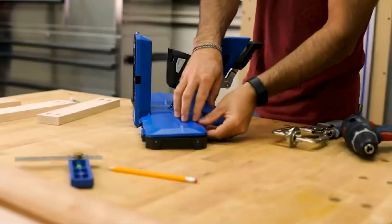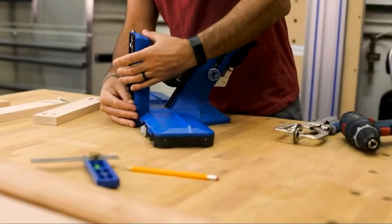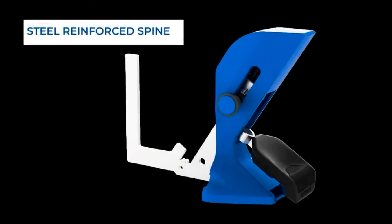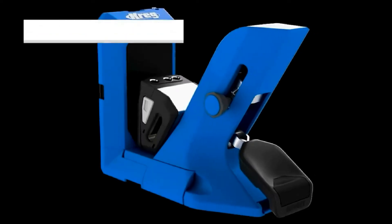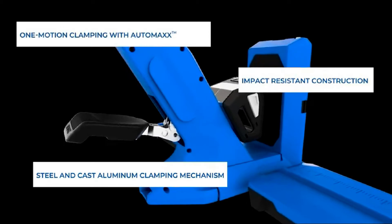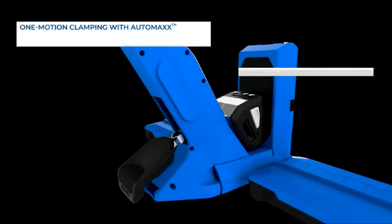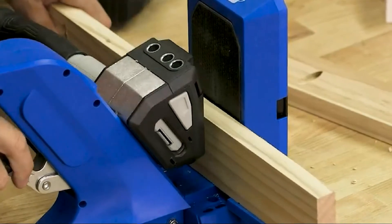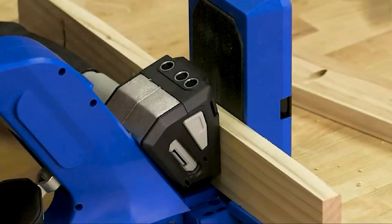The Kreg pocket hole jig 720 Pro isn't just built to work fast and work well—it's also built to last, with a steel reinforced spine, a steel and cast aluminum clamping mechanism, and durable impact resistant polymer construction, plus lifetime warranted hardened steel drill guides. That means you can rely on your pocket hole jig 720 Pro to be with you for a lifetime of project building.